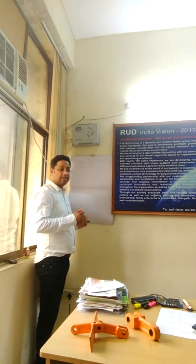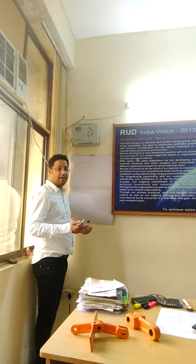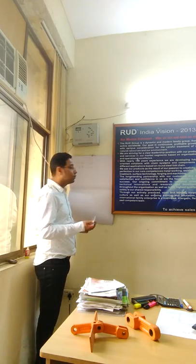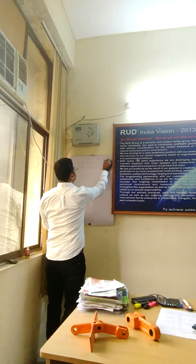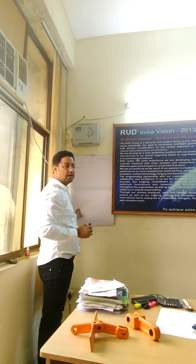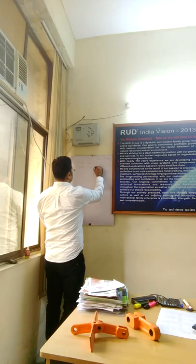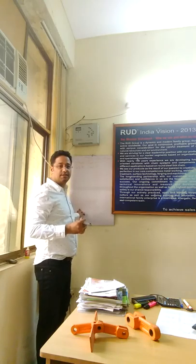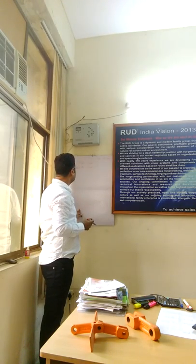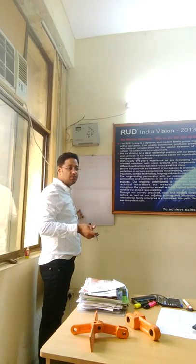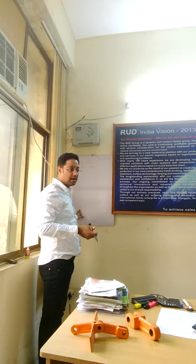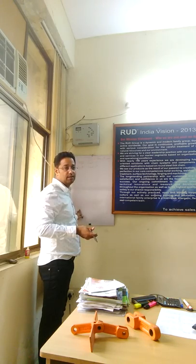Today's topic is drag chain conveyors. A drag chain conveyor is available in two main options: single strand and double strand. We need to understand where each is used, because the application areas are different and we need to segregate them in terms of application.